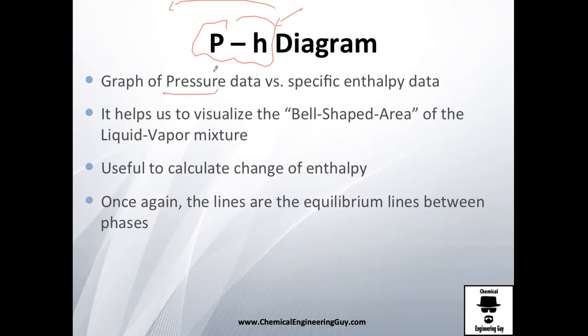It's essentially a graph of pressure versus specific enthalpy. Why specific enthalpy? We want to know how much enthalpy per unit of mass we can get. It helps us visualize the bell-shaped area, similar to the pressure-specific volume diagram. Since we're interested in liquid-vapor mixtures, this is very helpful.